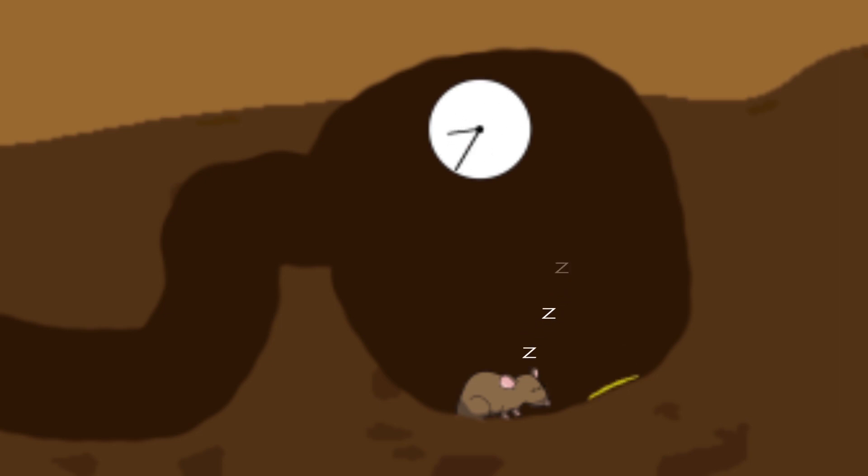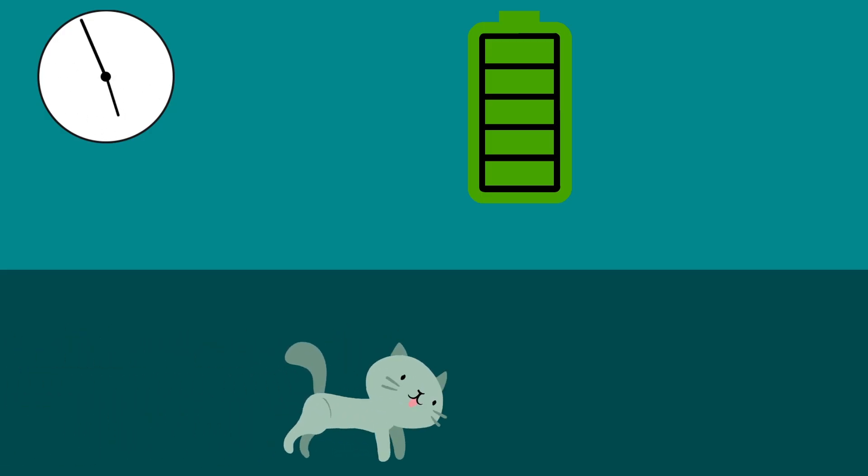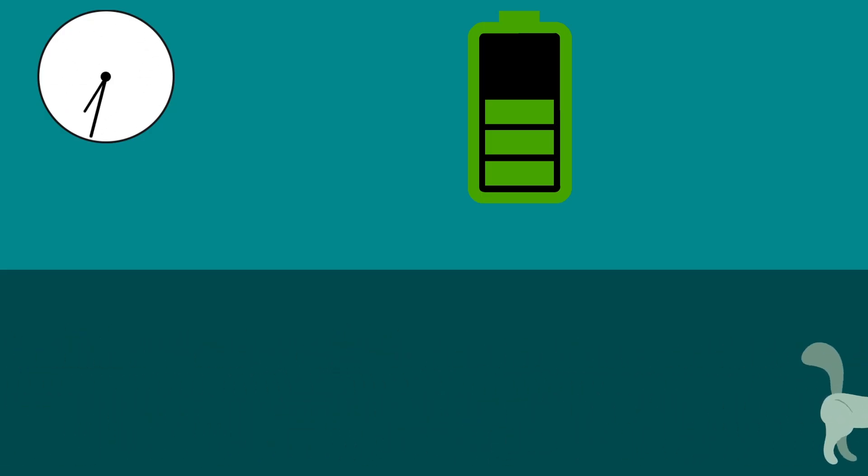In scientific terms, hibernation is defined as a state of inactivity and metabolic depression in endotherms. It refers to a season of heterothermy characterized by low body temperature, slow breathing and heart rate, and low metabolic rate.